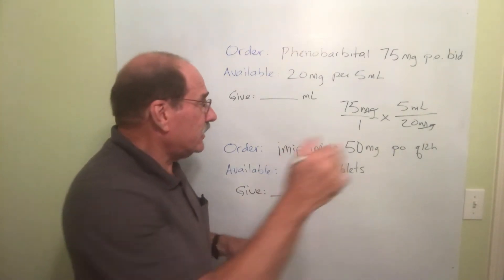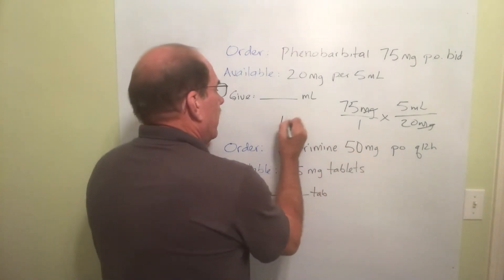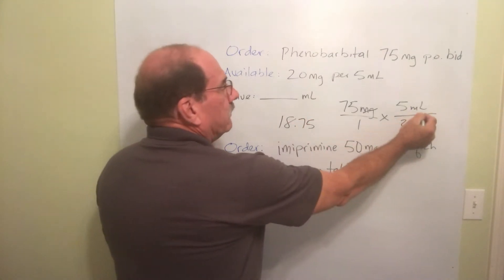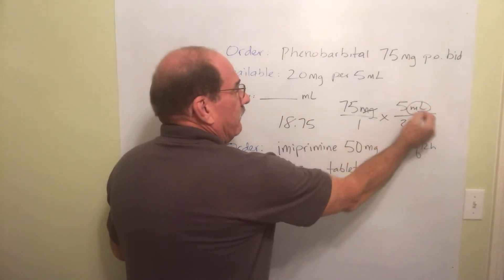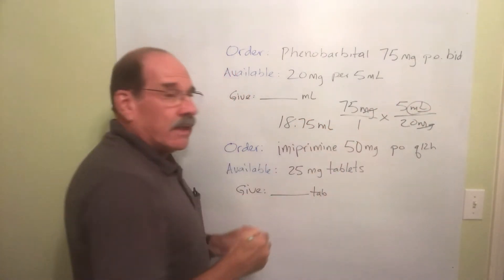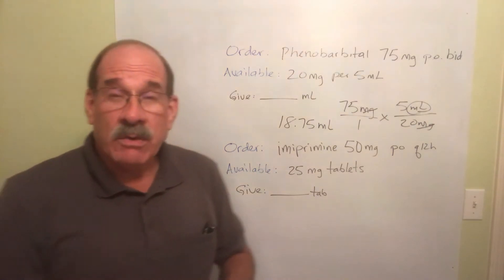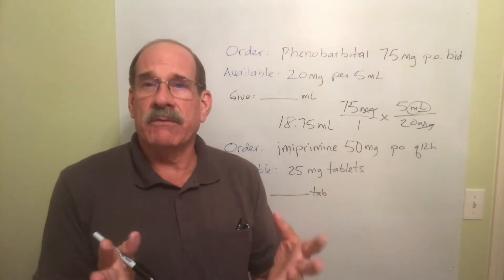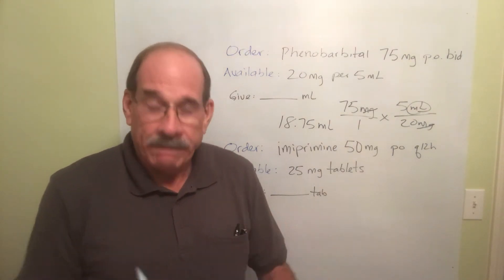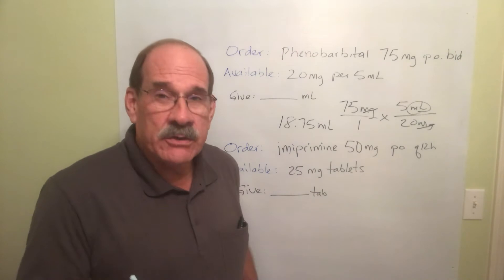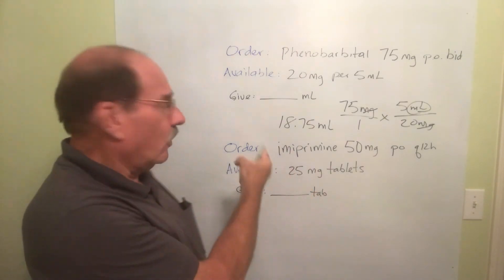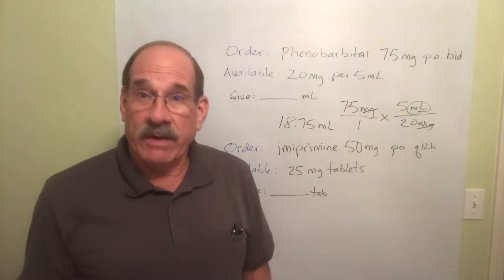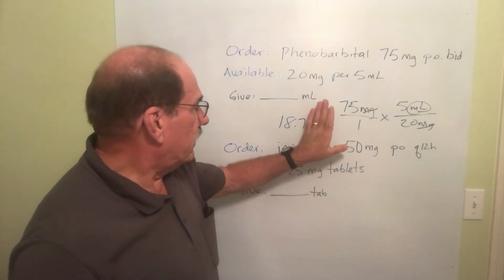Now let's see about this. 18.75 — what units? Whatever's left: milliliters. Let's go back to our rounding off rule. Let me refresh your memory. If the answer is more than one — which, of course, that is — how far do you round off? To tenths.